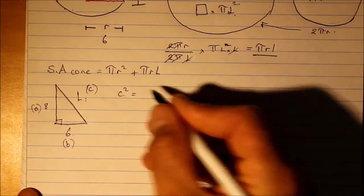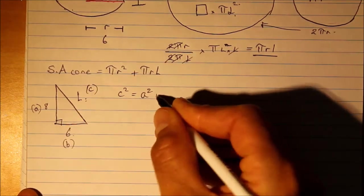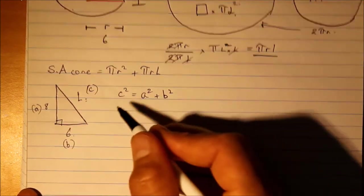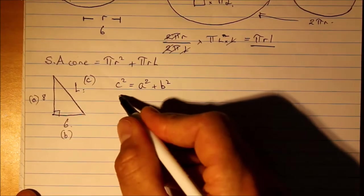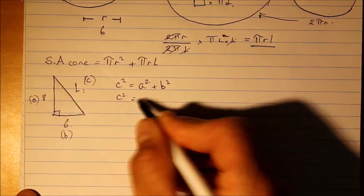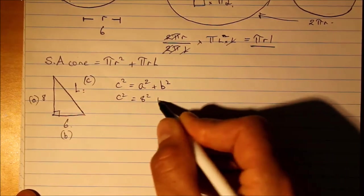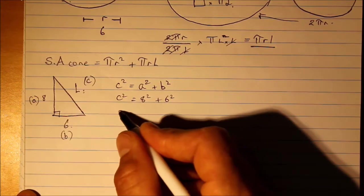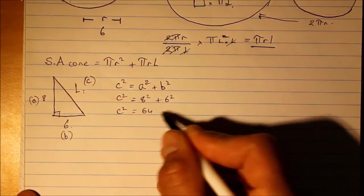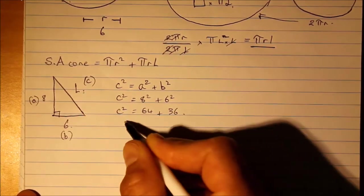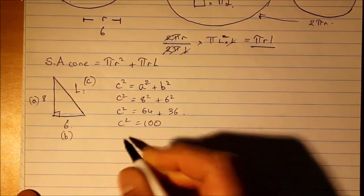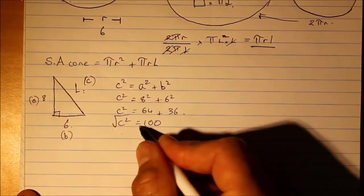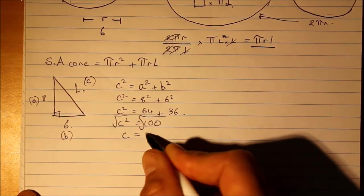So that gives us our typical Pythagorean formula c² = a² + b², and we can go ahead and substitute this in. So 8² + 6², 64 + 36, and we end up with c equal to 10.